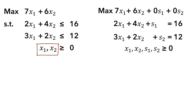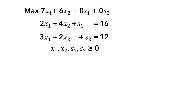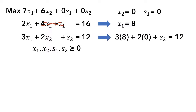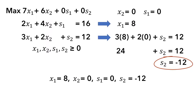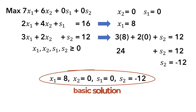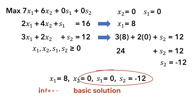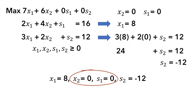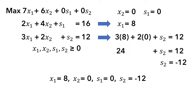Since we have two decision variables in the original problem, the simplex method starts by setting two of these four variables to zeros, then solving for the values of the other two. For example, if we set x2 and s1 to 0, then x1 equals 8. Plugging that into the second equation, we obtain s2 equals negative 12. This is called a basic solution. However, it is not feasible because s2 equals negative 12 violates the non-negativity requirement. x2 and s1 that are set to 0 here are called non-basic variables, while x1 and s2 are called basic variables.